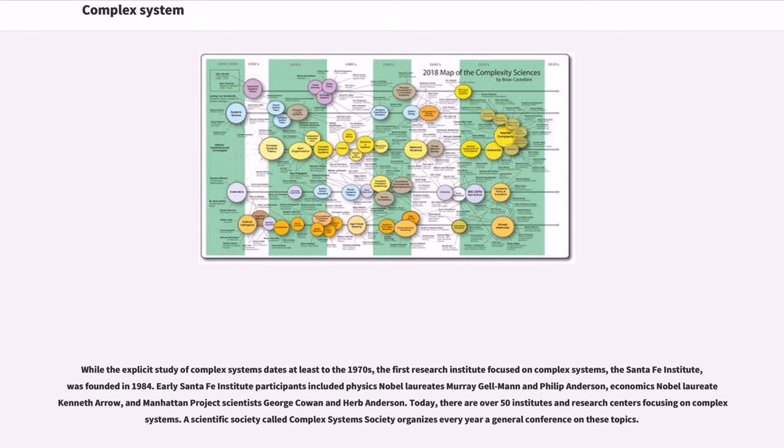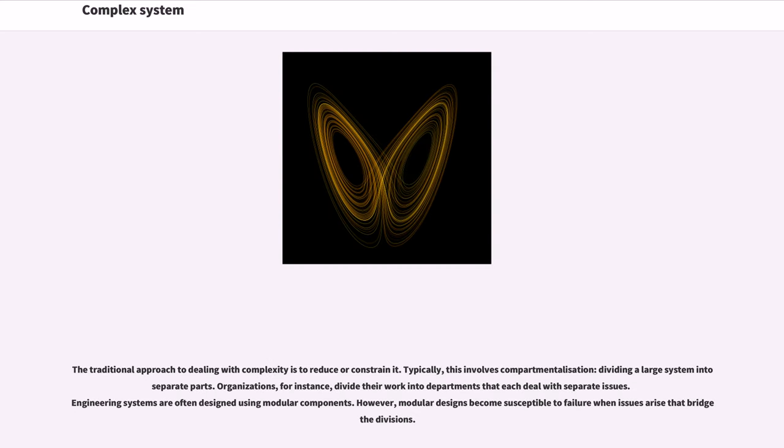A scientific society called Complex Systems Society organizes every year a general conference on these topics. The traditional approach to dealing with complexity is to reduce or constrain it. Typically, this involves compartmentalization, dividing a large system into separate parts. Organizations, for instance, divide their work into departments that each deal with separate issues. Engineering systems are often designed using modular components.